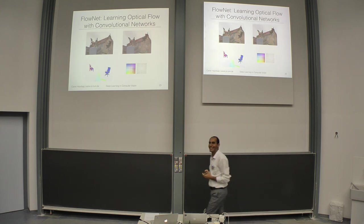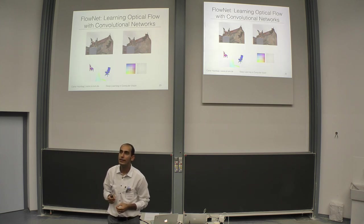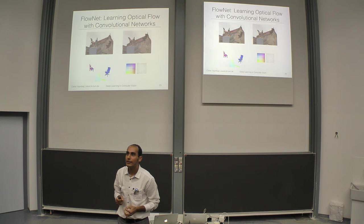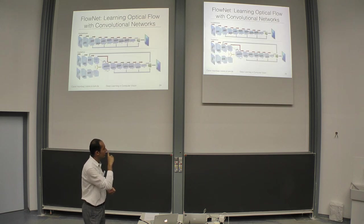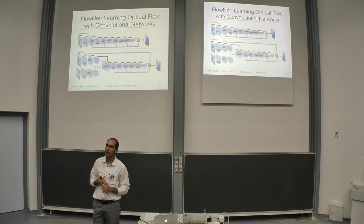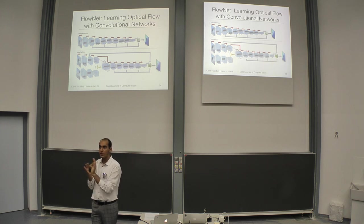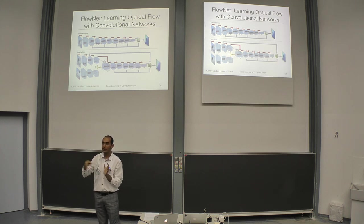Q: How many nodes and layers are in the neural network? A: There are nine convolution layers. You start with 7×7 kernels, then decrease to 5×5, then 3×3, and stay at that size. The number of filters increases with the number of layers.